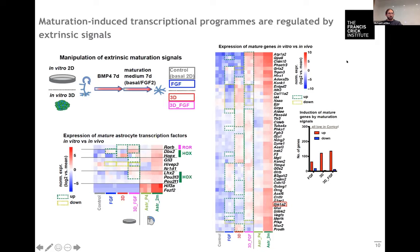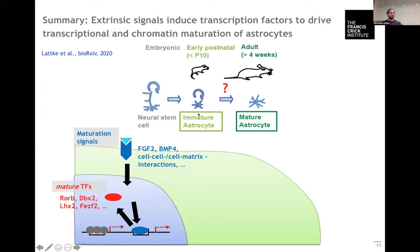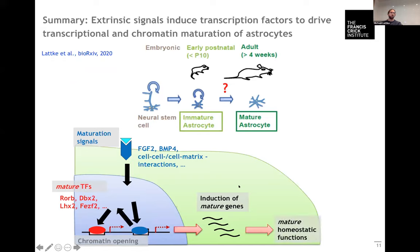Overall this suggests pretty strongly that astrocyte maturation is mainly driven by extrinsic signals which are then using intrinsic mediators, transcription factors, which are involved in the chromatin remodeling and through this the induction of the expression of these mature astrocyte genes which are required to establish the mature astrocyte functions.